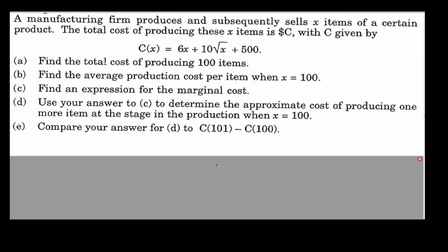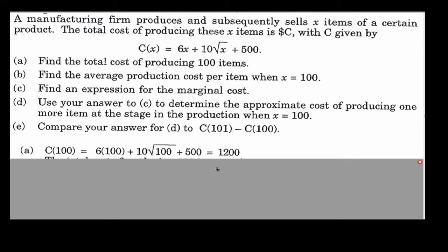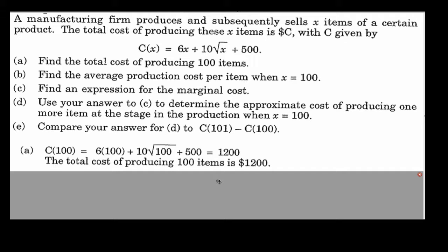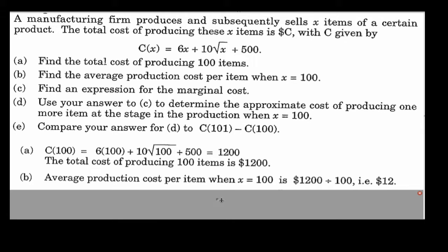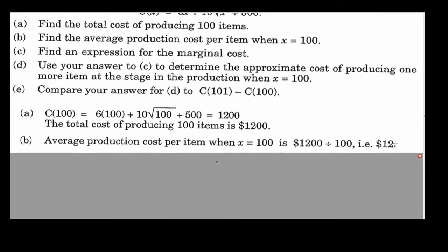Let's look at some examples. We have a cost function: C(x) = 6x + 10√x + 500, where 500 is the setup cost. First question: how much does it cost to produce 100 items? Substituting 100 gives $1,200. The average production cost per item when x equals 100 is $1,200 divided by 100, which is $12 per item.